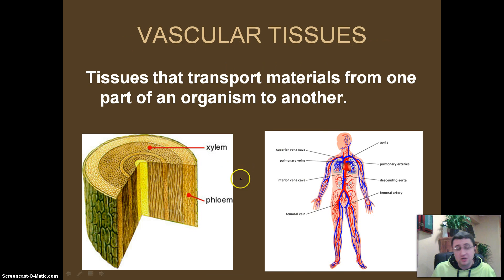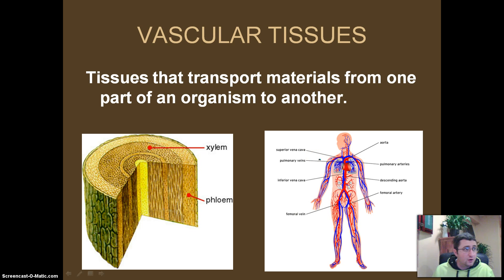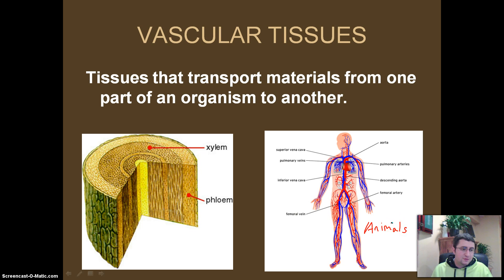Plants have vascular tissues. Vascular tissues are things that transport materials from one part of an organism to another. In animals, this is a diagram of a human being and our vascular system — we have what's called arteries and veins. They're responsible for moving around blood, which carries nutrients and oxygen and all these things that we need to different parts of our body so that we can use it and stay alive.